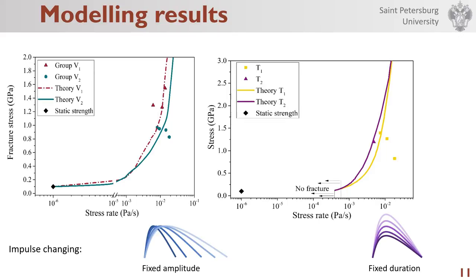The obtained dependencies are presented for two ways of stress rate changing. When modeling the left graph, the impulse duration was changing. For the right graph, the amplitude was changing. In this case, there is a limit amplitude below which fracture does not occur. This is shown in the right picture.